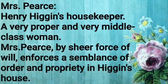The next character is Mrs. Pearce. She is Henry Higgins's housekeeper. She is from the middle class and is a very popular and respected person. By sheer force of will, she enforces a sense of order and propriety in Higgins's house. She expresses Eliza's feelings and situation to Higgins, acting as an advocate for Eliza within the household.